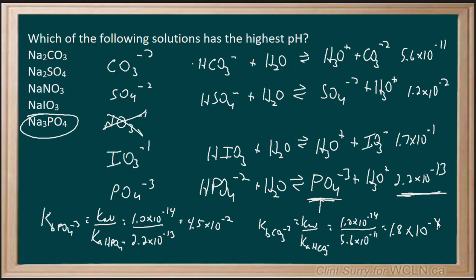So you can see the Kb for the phosphate is much larger, meaning again this is the most basic of the options given.